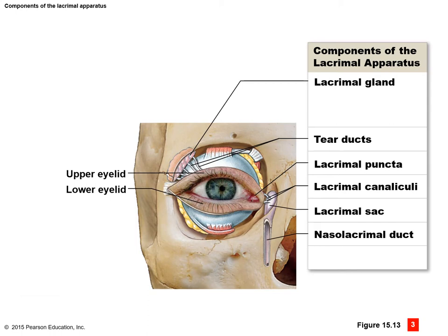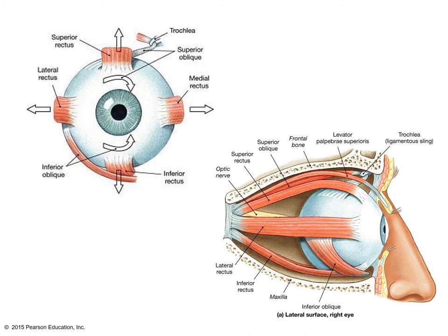The ability to move the eye is controlled by six extraocular eye muscles, innervated by three separate cranial nerves. The superior rectus, inferior rectus, medial rectus, and inferior oblique are innervated by cranial nerve three, the oculomotor nerve. The superior oblique is innervated by cranial nerve four, the trochlear nerve. The lateral rectus is innervated by cranial nerve six, the abducens. The superior rectus rotates the eye up, the inferior rectus rotates it down, the medial rectus adducts the eye, and the lateral rectus abducts it. The superior oblique depresses and abducts the eye at an angle, and the inferior oblique elevates and abducts the eye.